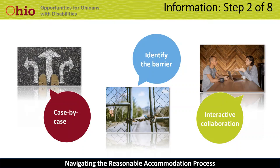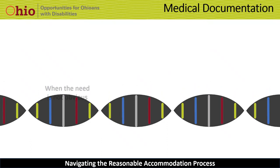There are times a person's disability and the need for a reasonable accommodation is obvious — for example, when an employee who uses a wheelchair reports the path from his workstation to the conference room is not wide enough. But what happens when the disability, the need for an accommodation, or both are not obvious? When the disability or the need for accommodation is not obvious, you may ask the person questions to verify the disability exists and to better understand the need for the accommodation. You are also permitted to request medical documentation to obtain this information.